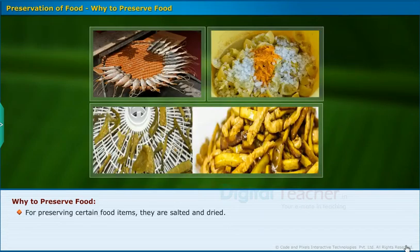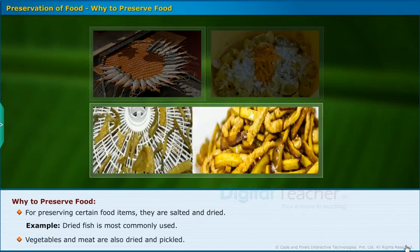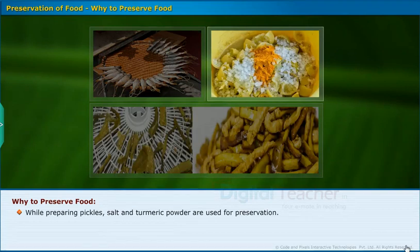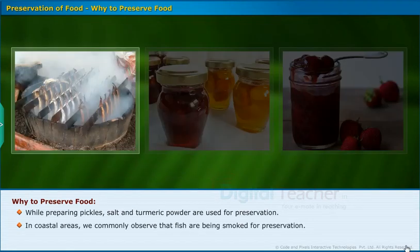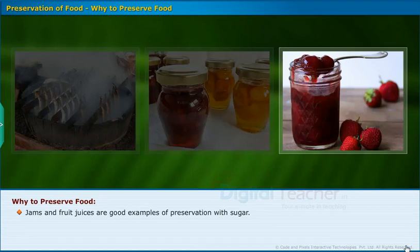For preserving certain food items, they are salted and dried — for example, dried fish is most commonly used. Vegetables and meat are also dried and pickled. While preparing pickles, salt and turmeric powder are used for preservation. In coastal areas, fish are commonly smoked for preservation. Fruits are generally preserved in sugar syrup or honey. Jams and fruit juices are good examples of preservation with sugar.